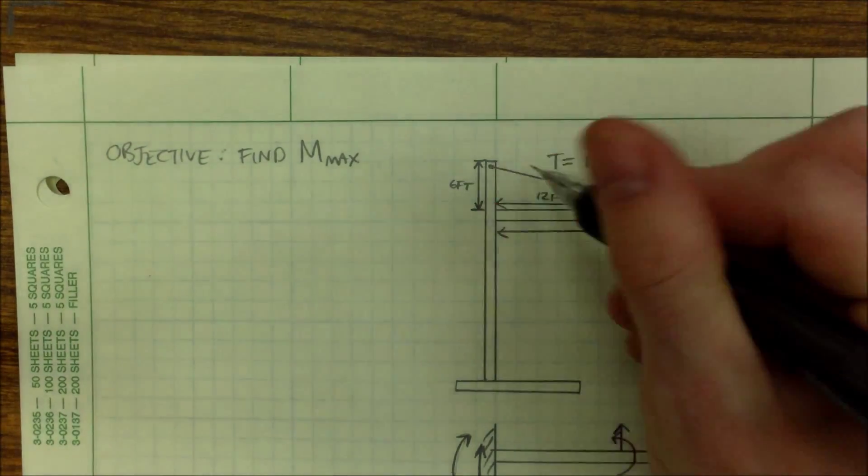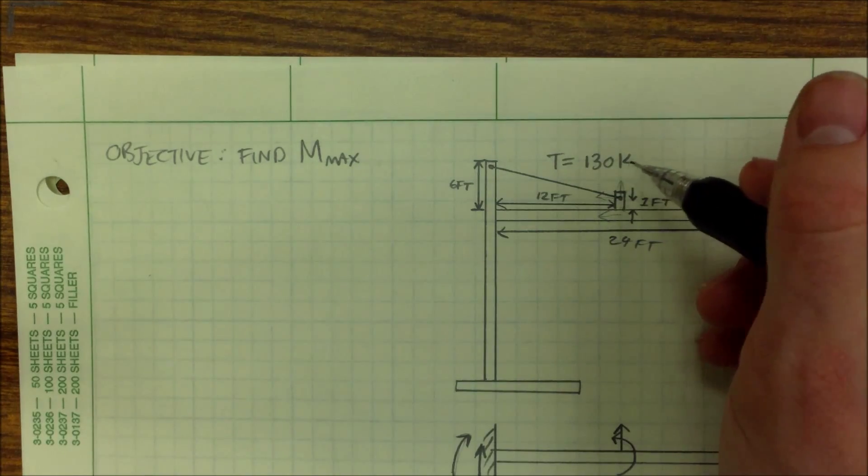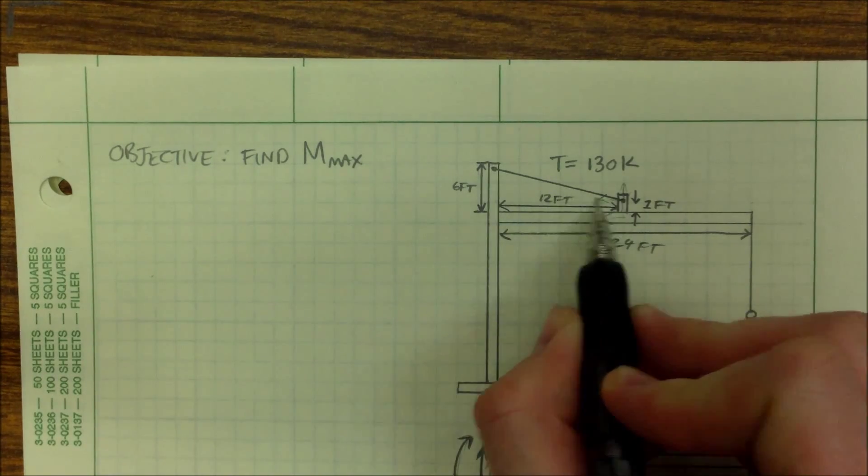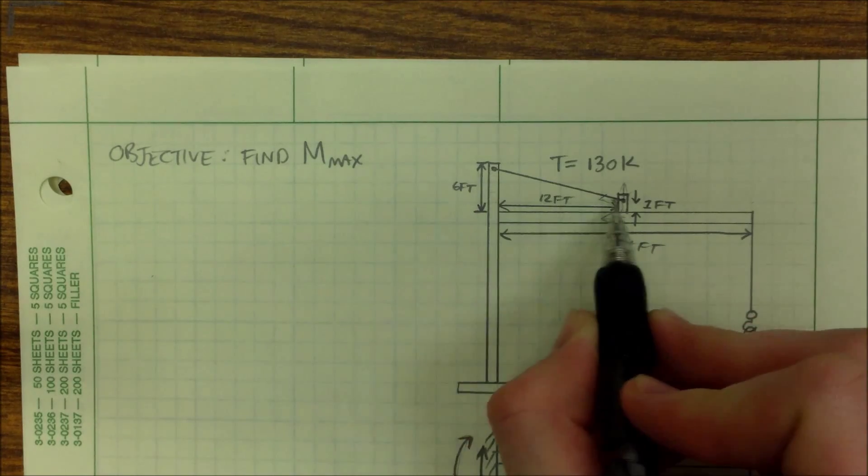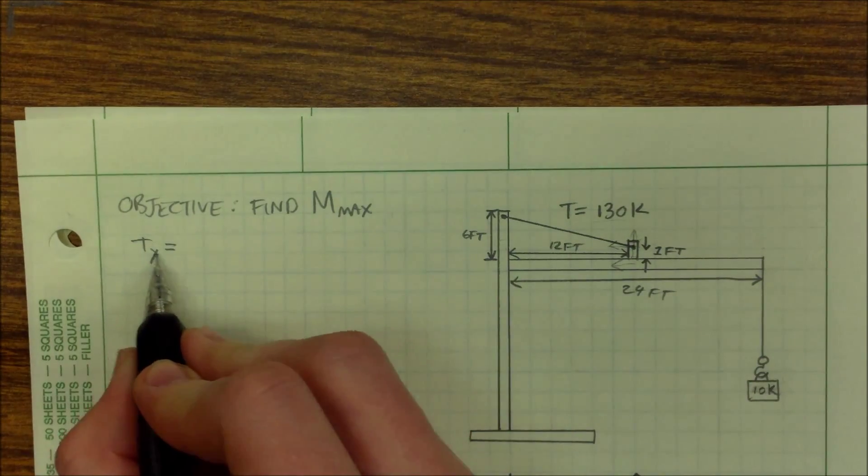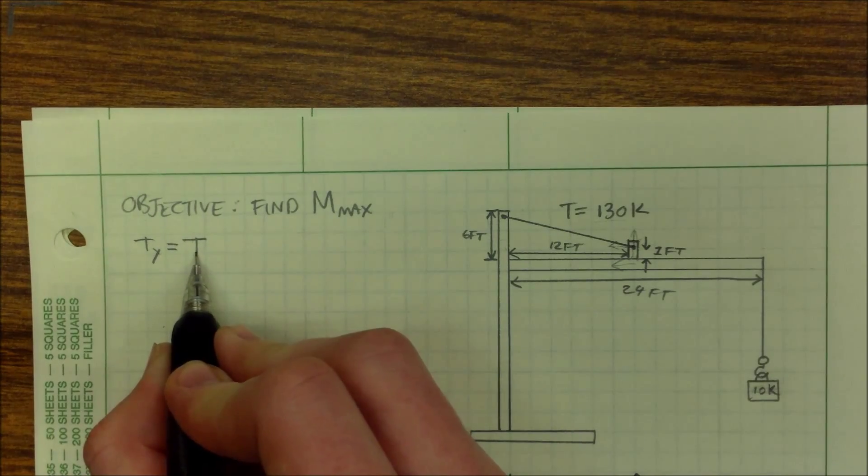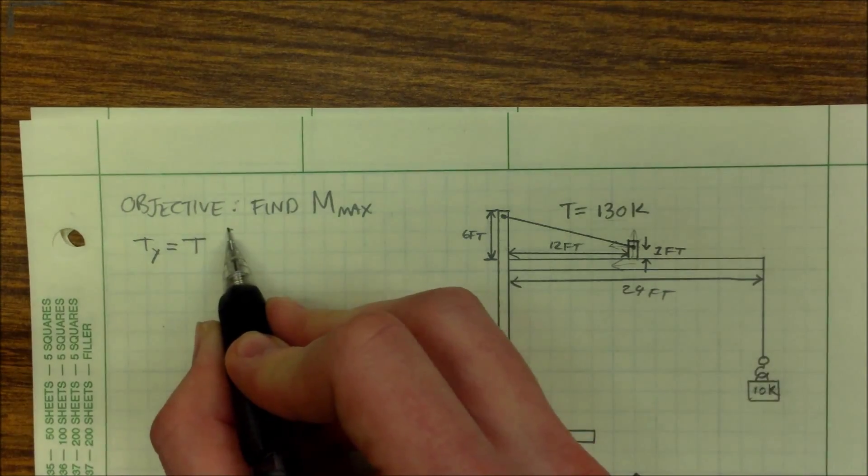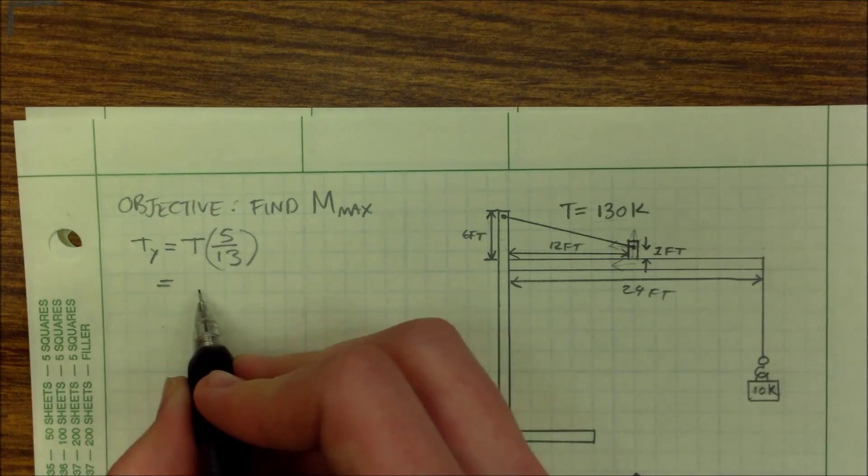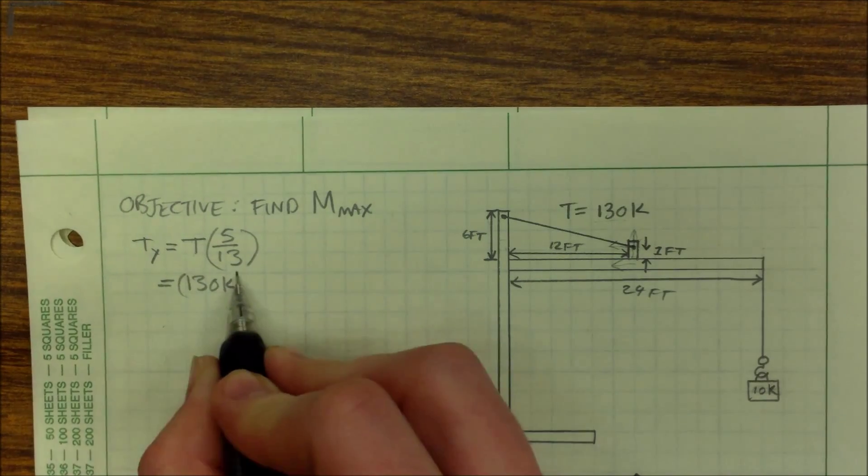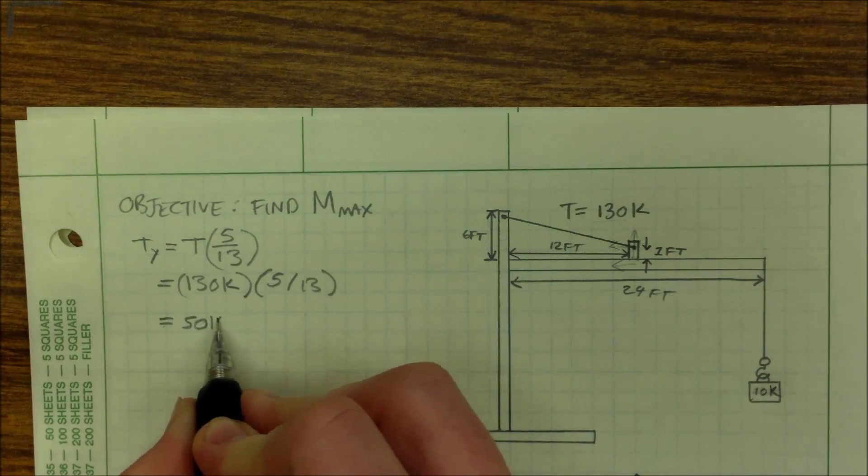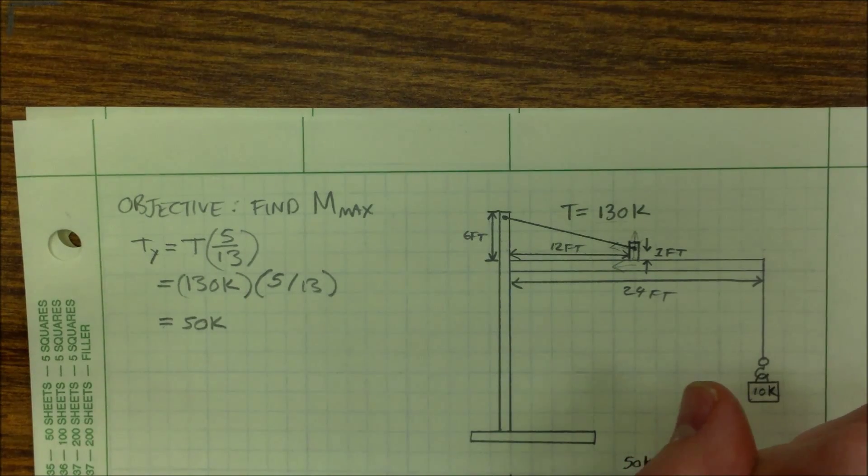Okay, I have the dimensions of this cable and I have the tension in that cable. This difference in height, I have six feet here and one foot here, which means the cable goes vertically up five feet and it's horizontally over 12 feet. So the length is 13 feet. I need to know the vertical component of this force. So I have the total tension, but I'm looking at the vertical component. So that's going to be 5/13ths, which equals 130K times 5/13ths equals 50K. So this is 50K.